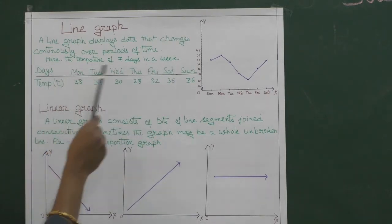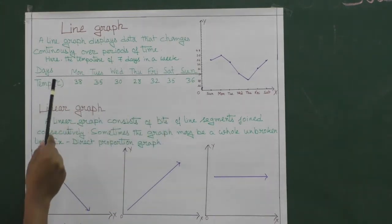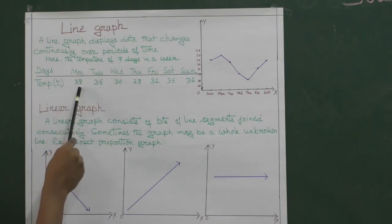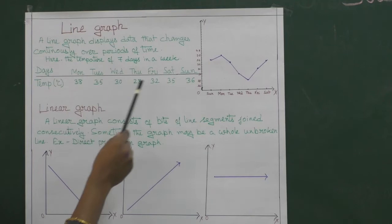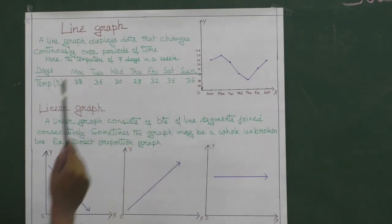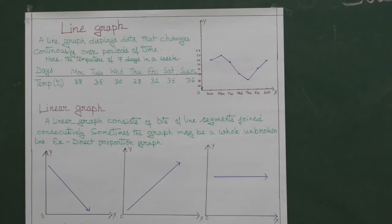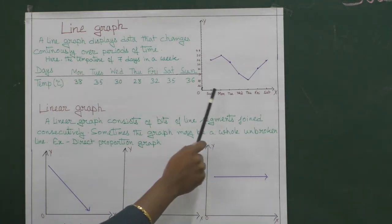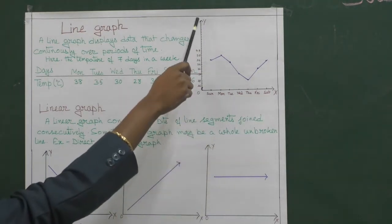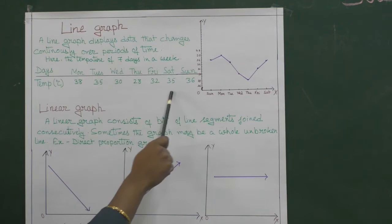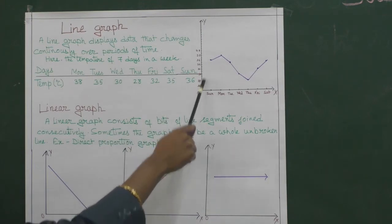Days from Monday to Sunday, we have taken temperature. Monday 38, Tuesday 35, Wednesday 30, and so on up to Sunday 36 degrees Celsius. Now we are going to represent this data in a graph. So here along the x-axis we have taken the days, and along the y-axis we have taken the degree centigrade, which means the temperature.